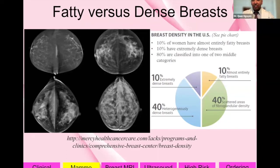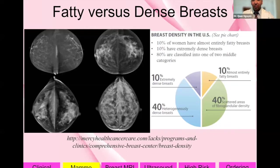Regarding fatty versus dense breasts: 10% of women have extremely dense breasts, 40% have heterogeneously dense breasts — those together comprise the dense breast group. Another 40% have scattered fibroglandular density and 10% have fatty breasts. Cancer appears white on a mammogram, so if you have dense breasts, the white cancer can hide in the white dense background tissue, making cancers harder to detect on mammogram.